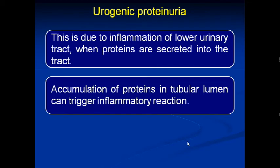Urogenic proteinuria is due to inflammation of the lower urinary tract. When proteins are excreted in the tract, accumulation of protein in the tubular lumen can trigger inflammation reactions. Due to this inflammation, protein escapes into the urine, and that condition is called urogenic proteinuria. The main cause of urogenic proteinuria is inflammation of the lower urinary tract.